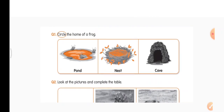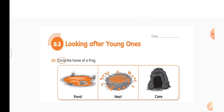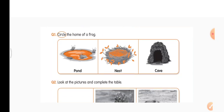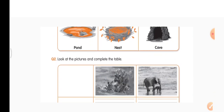Open your worksheet 8.3: Looking After Young Ones. Question 1: circle the home of a frog. Is it a pond, a nest, or a cave? We know that birds live in nests and animals like tigers and lions live in caves. Frogs live in ponds, so you are going to circle the pond.